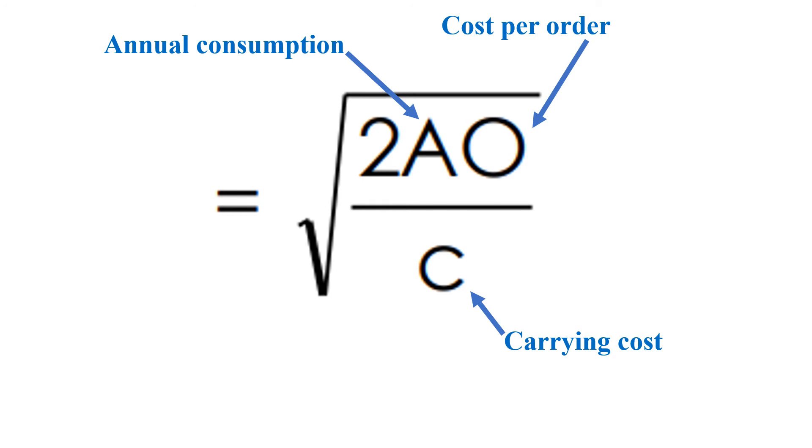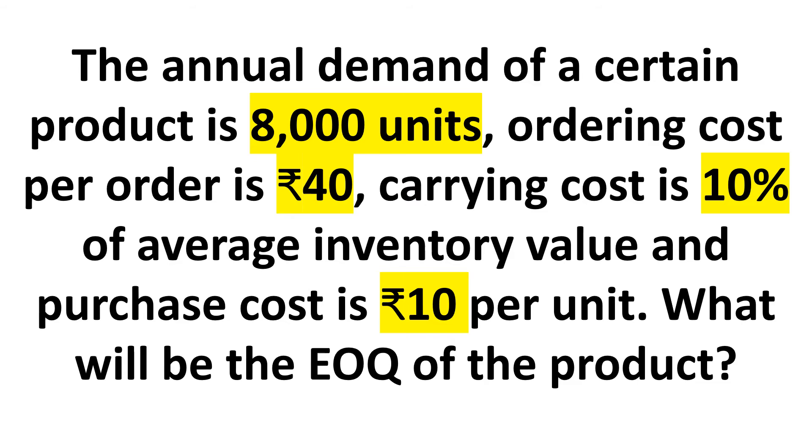Let's take an example. The annual demand of a certain product is 8,000 units. Ordering cost per order is Rs. 40. Carrying cost is 10% of average inventory value and purchase cost is Rs. 10 per unit. What will be the economic order quantity of the product?